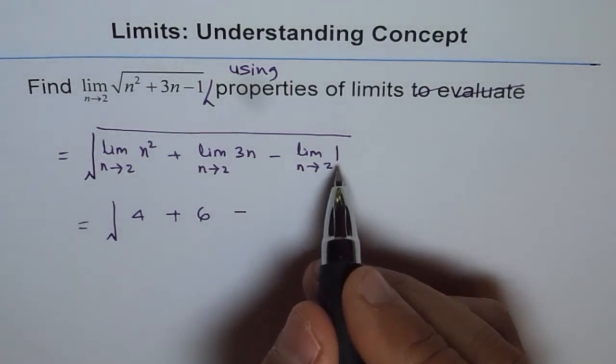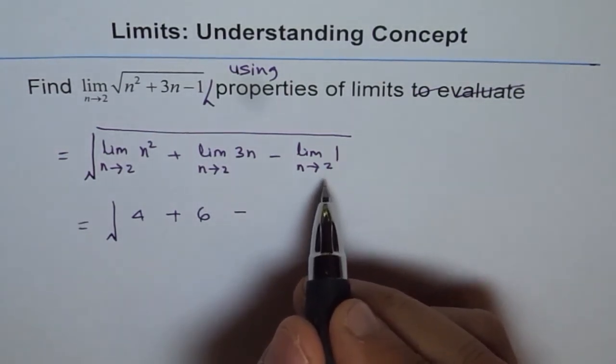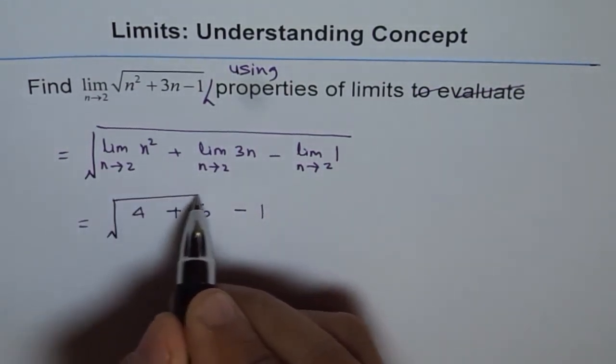For a constant, the limit is always the same. Whether it is approaching 2 or any number, you get 1.